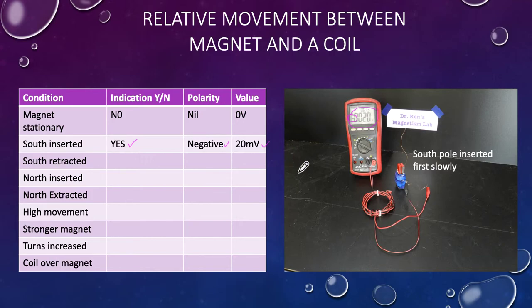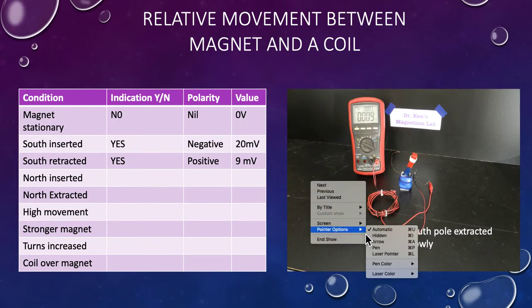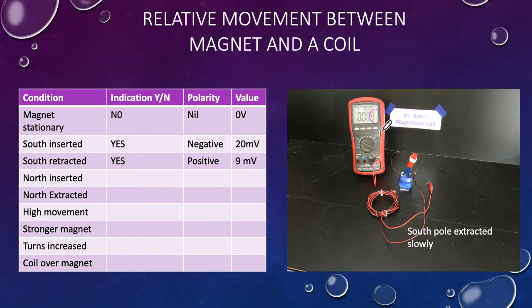Now we're going to take that same magnet and we're just going to pull it out at about the same speed that we put it in, so this time we've retracted it. And again you can see that we've got 9 millivolts, and you can see the polarity here - they don't put up a plus sign, they just put up a negative sign if it's negative. Therefore it's a positive 9 millivolts. I've got a response, it's positive and it's 9 millivolts. It's kind of what we would expect, isn't it? We get a negative voltage when we push the magnet in but we get a positive voltage when we pull it out because the magnetic field is moving in the opposite direction.